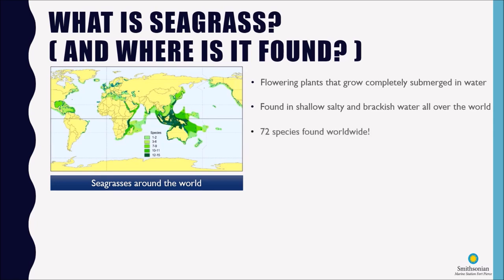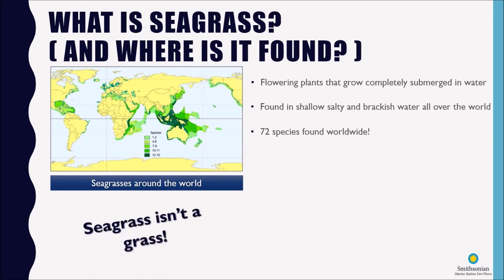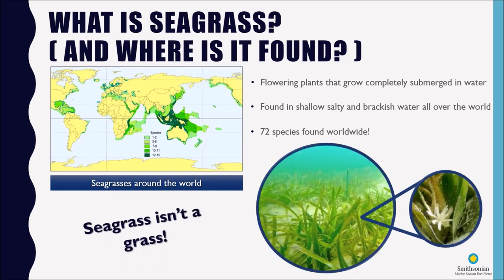There are 72 species of seagrasses found worldwide. The word seagrass is a little bit of a misnomer because seagrass isn't really a grass in the traditional sense. It's called seagrass because it has those grass-like leaves — kind of similar to the grass growing on your front lawn — but remember, these are flowering plants. We have a picture of a seagrass flower here, and that's kind of the main difference.